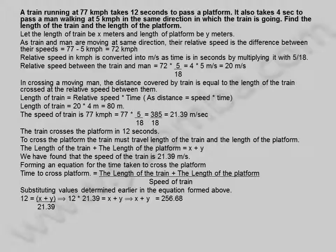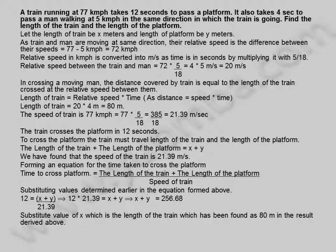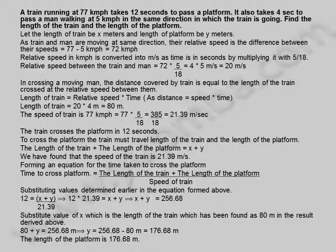12 into 21.39 equals x plus y, implies x plus y equals 256.68. Substituting x equals 80 meters: 80 plus y equals 256.68 meters, implies y equals 256.68 minus 80 meters, equals 176.68 meters. The length of the platform is 176.68 meters.